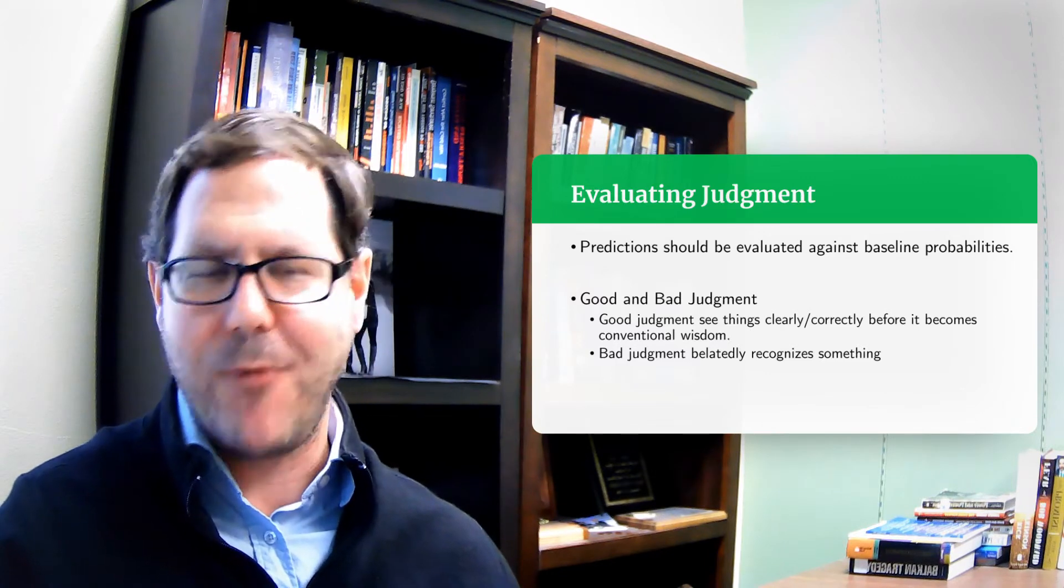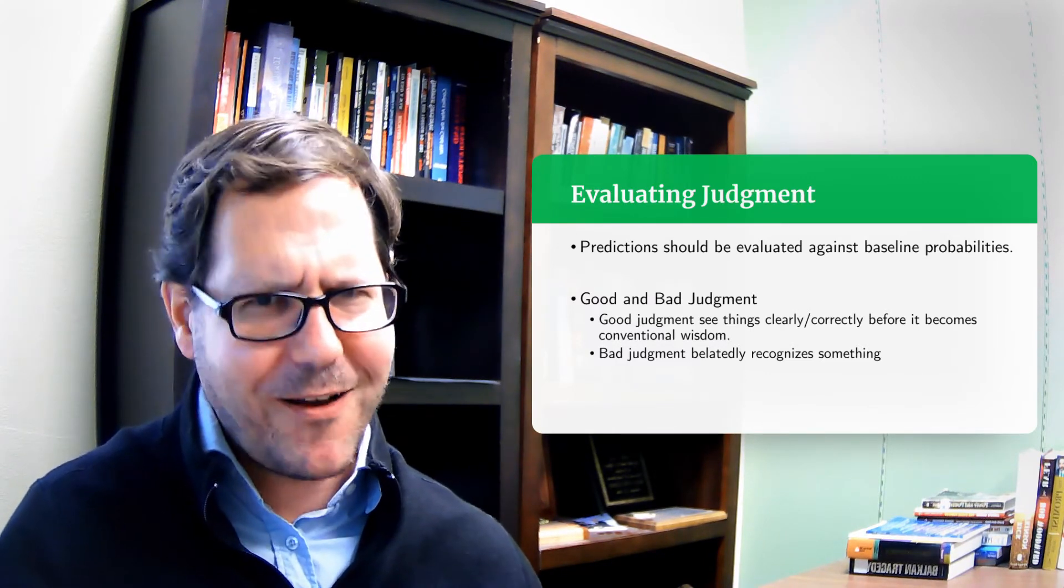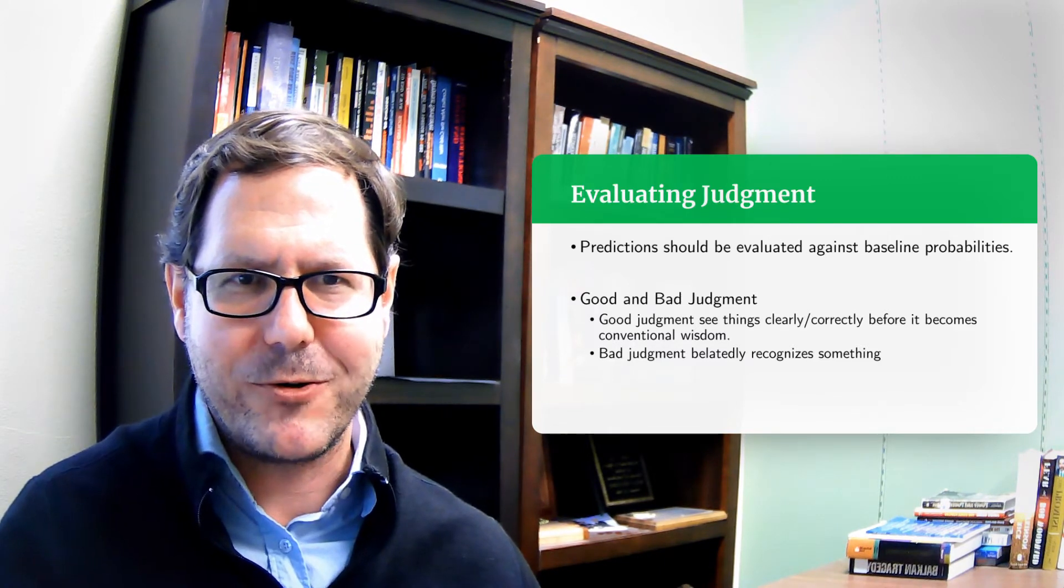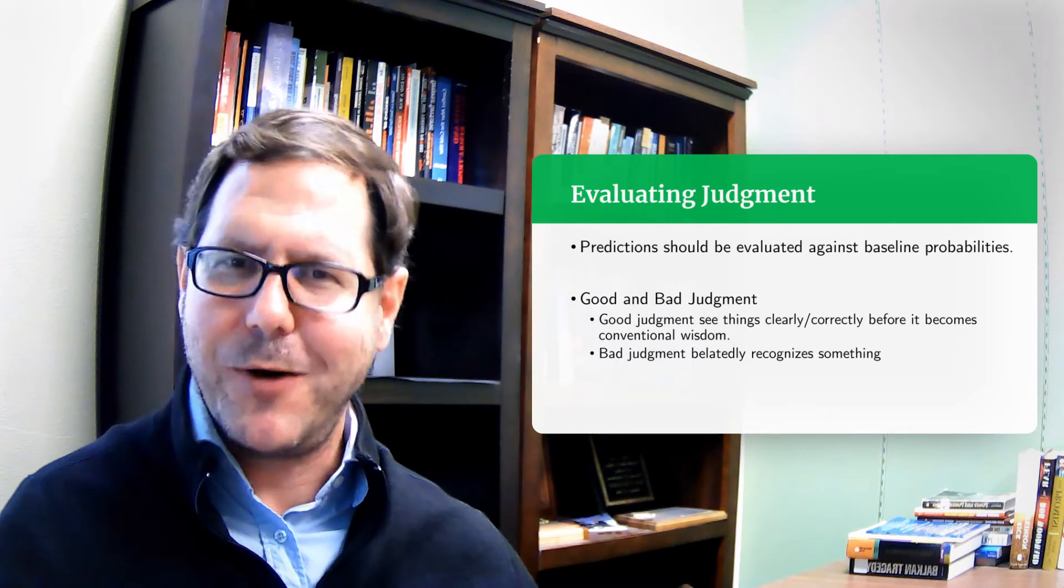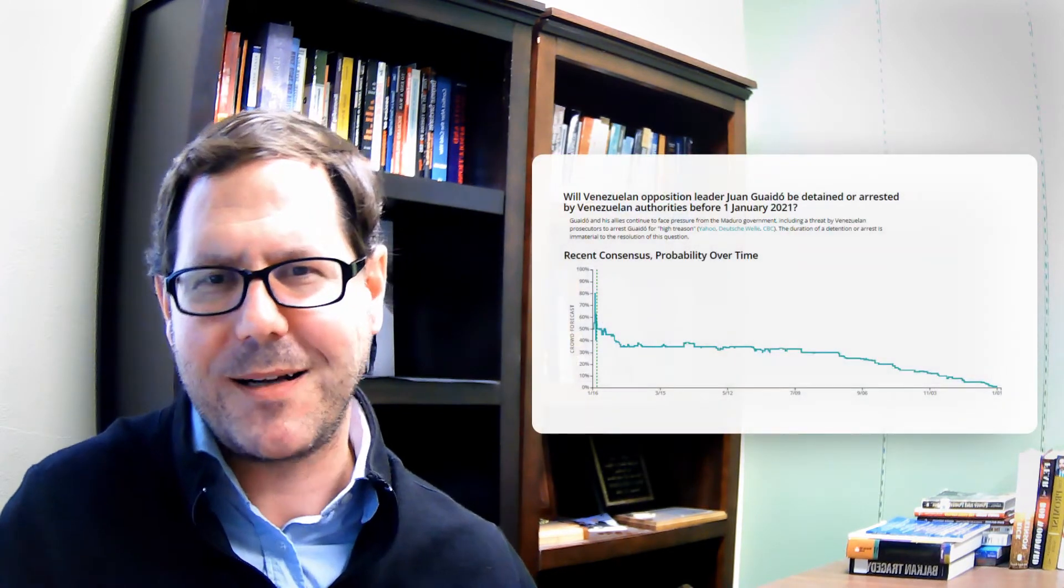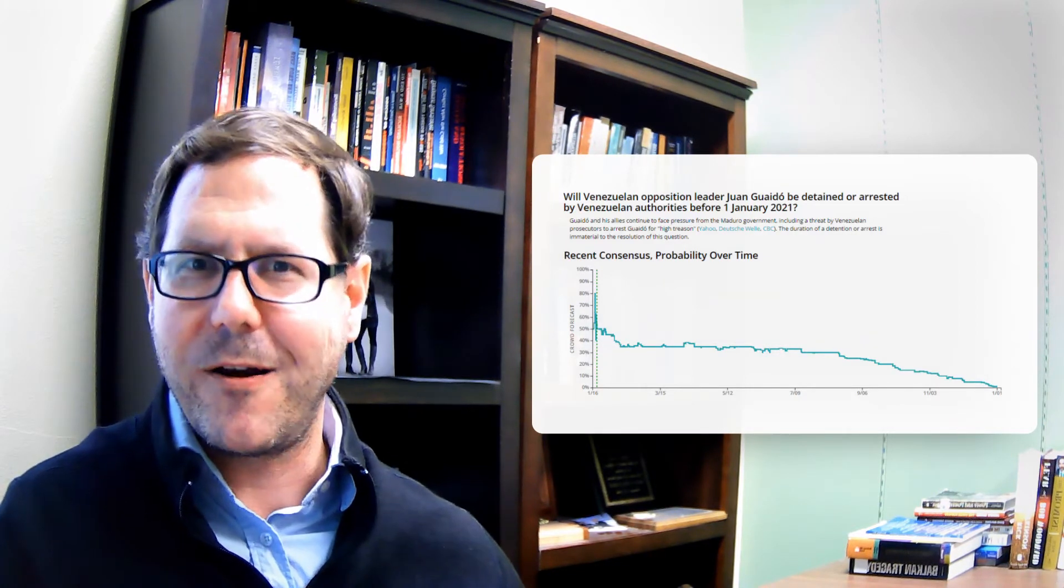Whereas bad judgment is everybody else has already figured out where things are going and you still don't see it. You are belatedly recognizing what's going on. On the surface that might be hard to figure out whether you're doing a good job or a bad job at your forecasts because we don't necessarily know what the conventional wisdom is.